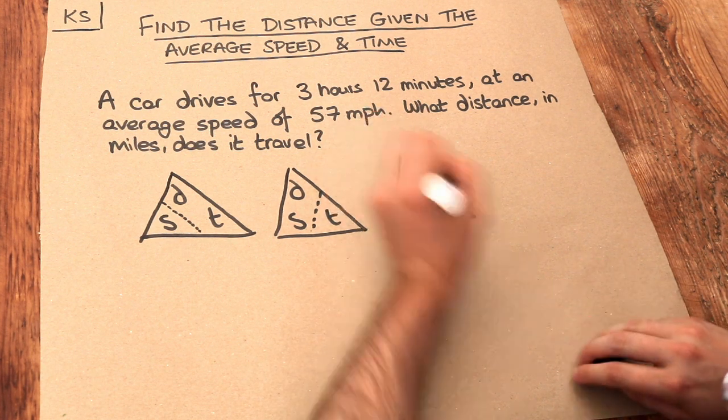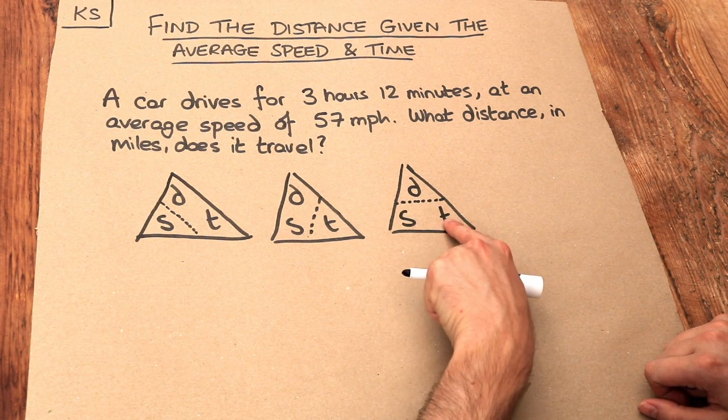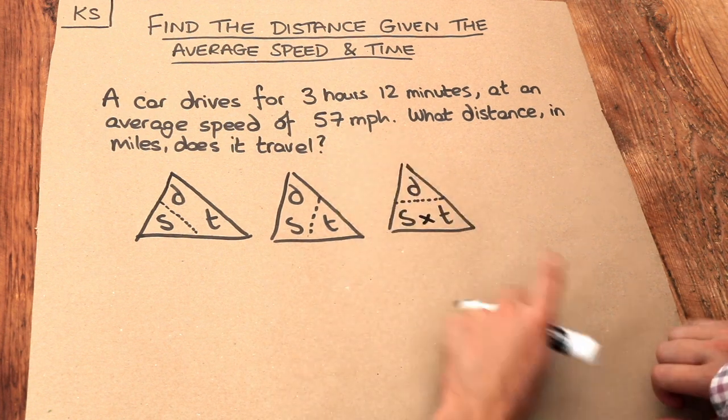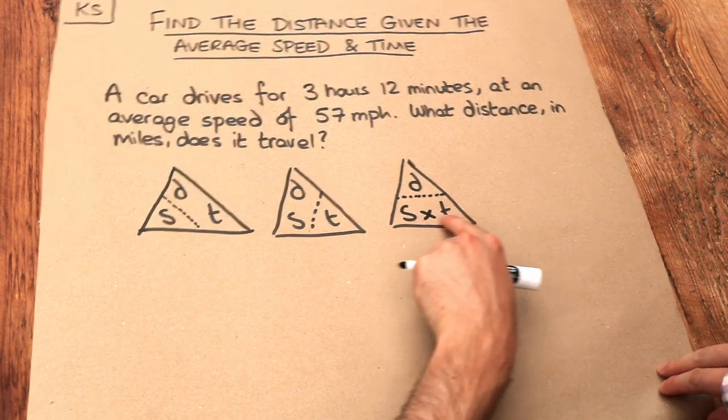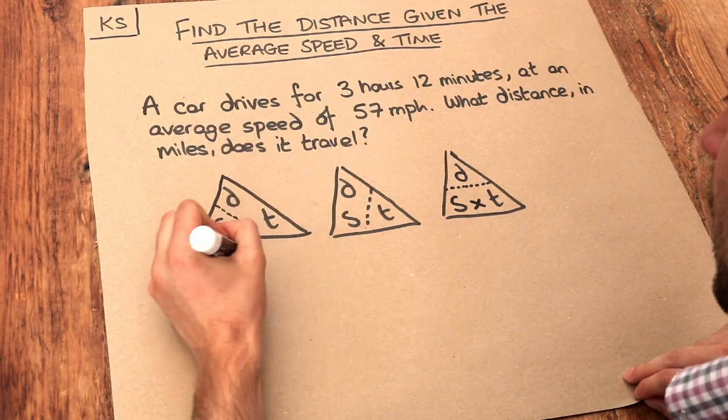Now you can see that the distance is the speed times the time. Remember when we have two things next to each other in algebra we times them, but you could put a little times sign here. So the distance is the speed times the time. Let's get our S and T from here.